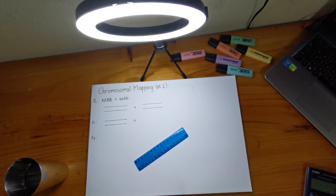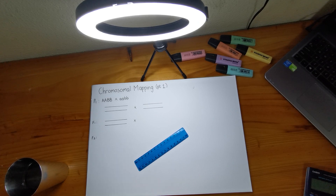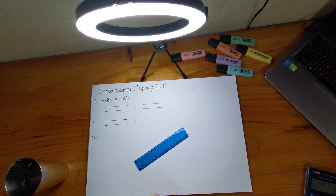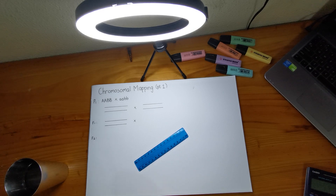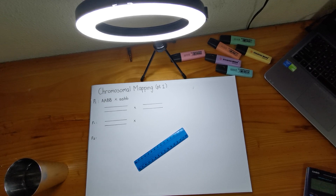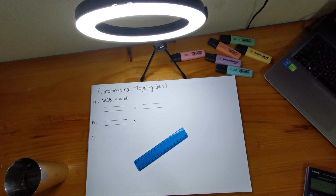The first thing I'm starting with is chromosomal mapping — specifically how to write out your chromosomal constitution and how to get your F2 groups. There may be a question asking what the F2 progeny look like, what their numbers are, what the recombinant types are, and what the parental types are, so I'm going to explain all of that.